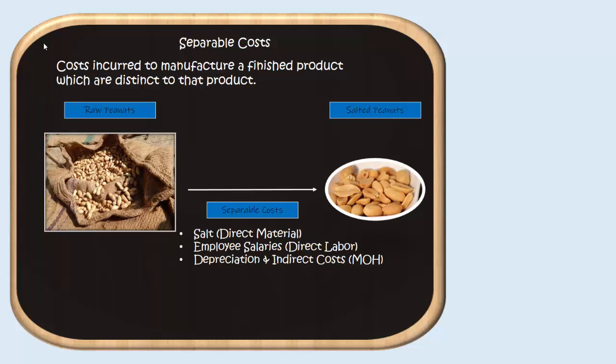If we have raw peanuts as our joint base product that goes into all of our different types of peanuts that we sell to customers, we convert some of those raw peanuts into salted peanuts — that is the finished product. So what separable costs do salted peanuts incur that are unique to that product?